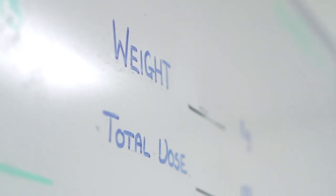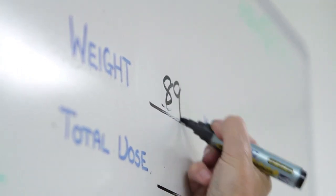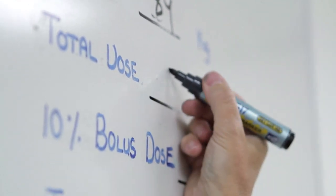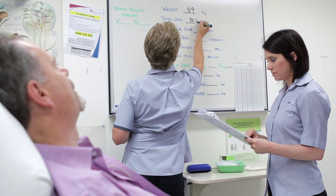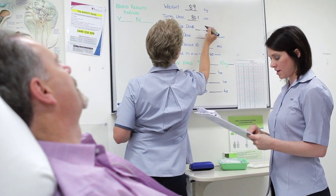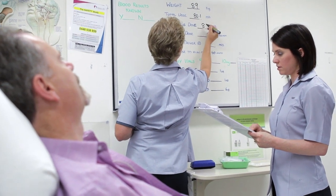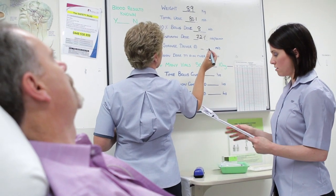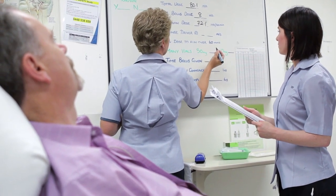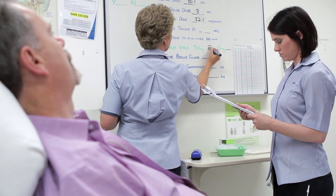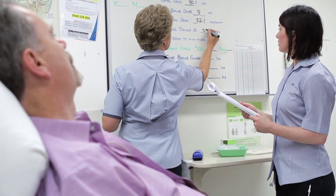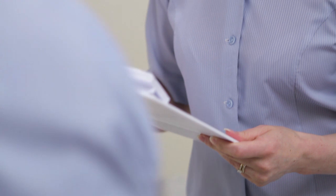Bob weighs 89 kilos. The total dose is 80.1 mg — the 10% bolus is 8 mg and the 60-minute infusion is 72.1 mg, using two vials: a 50 milligram and a 10 milligram vial. Infusion confirmed at 72.1 mg.